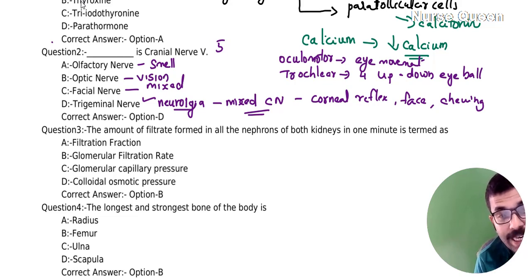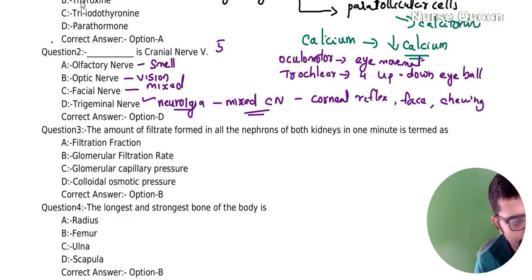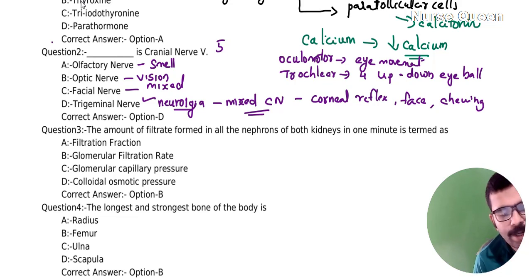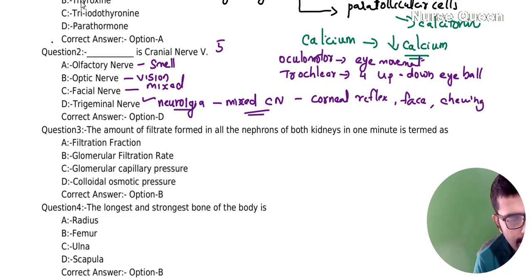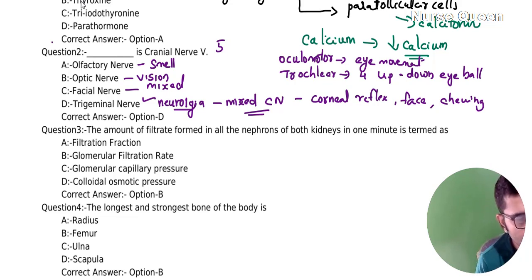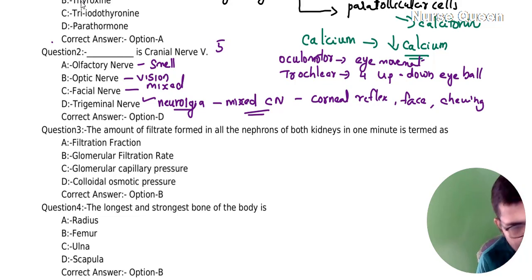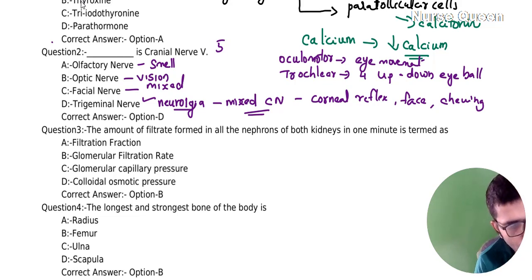Vestibulocochlear (8th cranial nerve) — hearing. Glossopharyngeal (9th cranial nerve) — mixed nerve, functions include taste and posterior tongue movement.